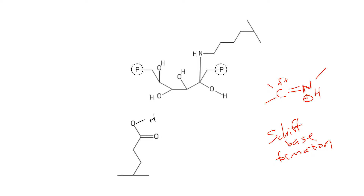In order to form the Schiff base, my lone pair of electrons from the nitrogen that I just regenerated is going to push down to make a double bond here to carbon-2 of my sugar. The electrons from this carbon-oxygen bond are going to go and grab a proton from my glutamate. The electrons from there are going to push onto that oxygen and give that oxygen a negative charge. This bond is going to break, and this hydroxyl group is going to leave as water.